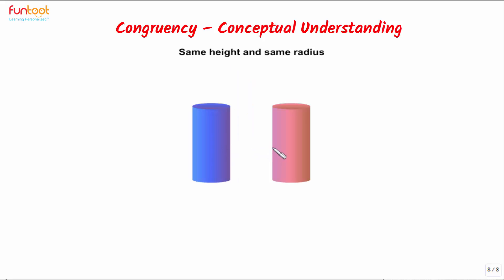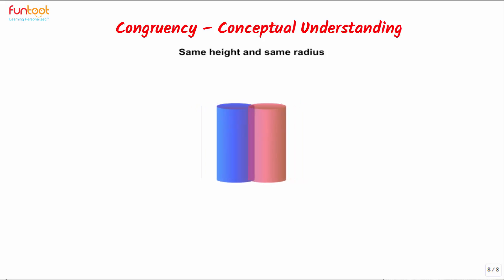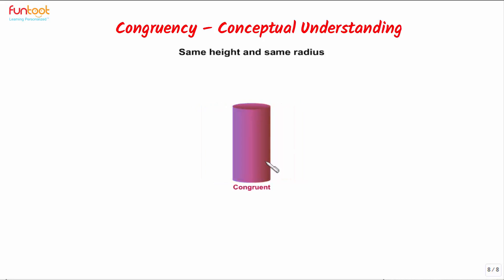Now we have two cylinders whose sizes are the same — that means they have the same height and the same radius. When one cylinder is placed in front of the other, we see them as one. The cylinders are congruent because they have the same shape and size. Let's now see all three cases together.